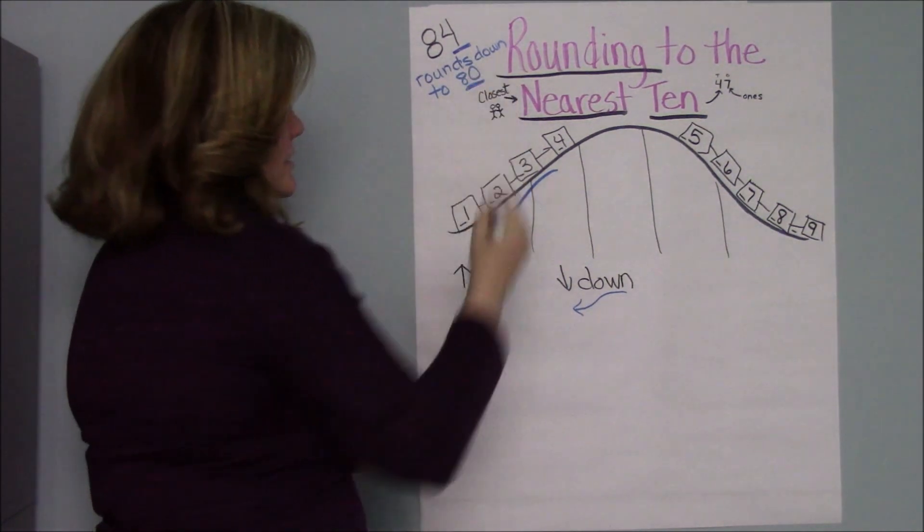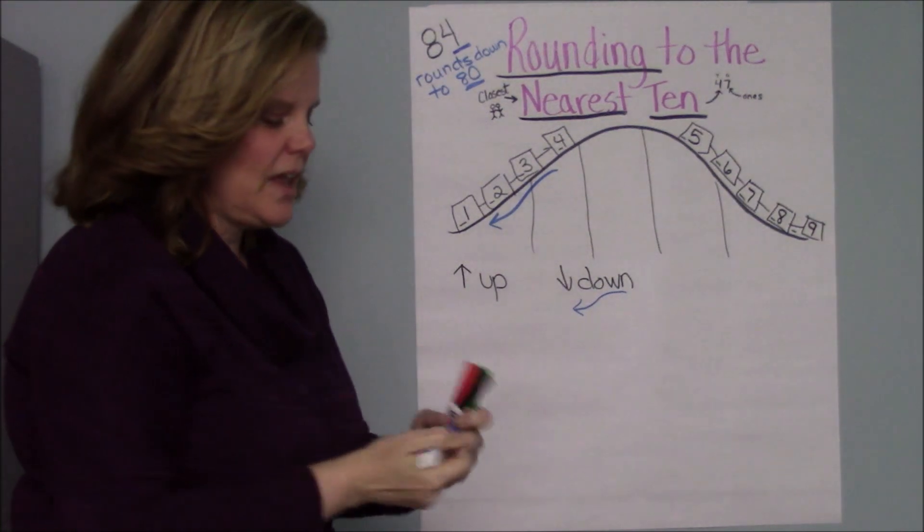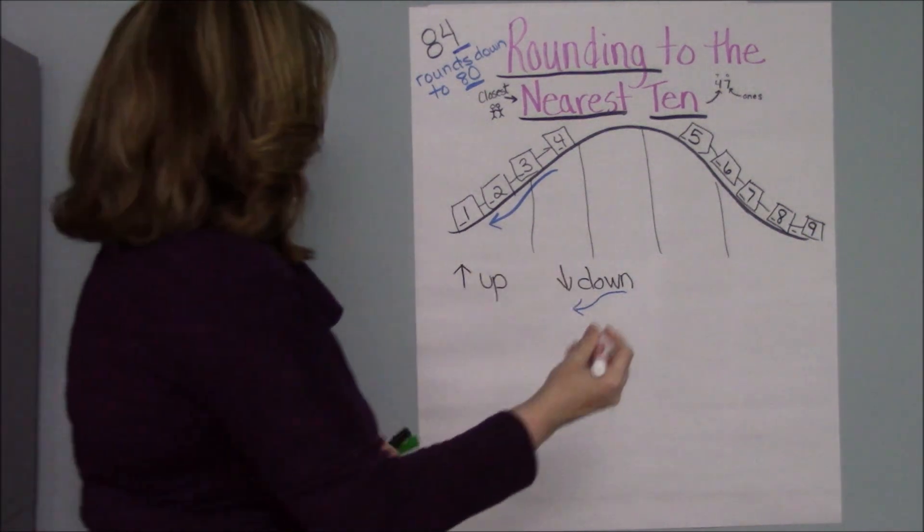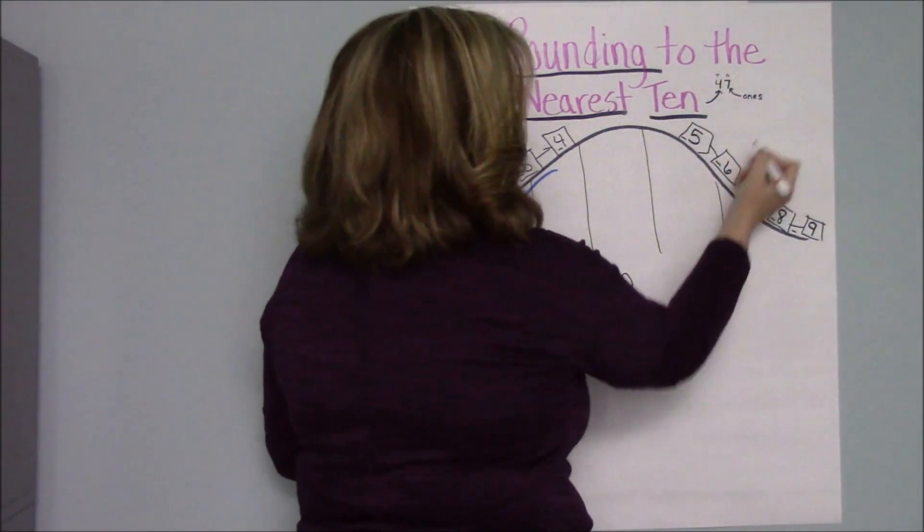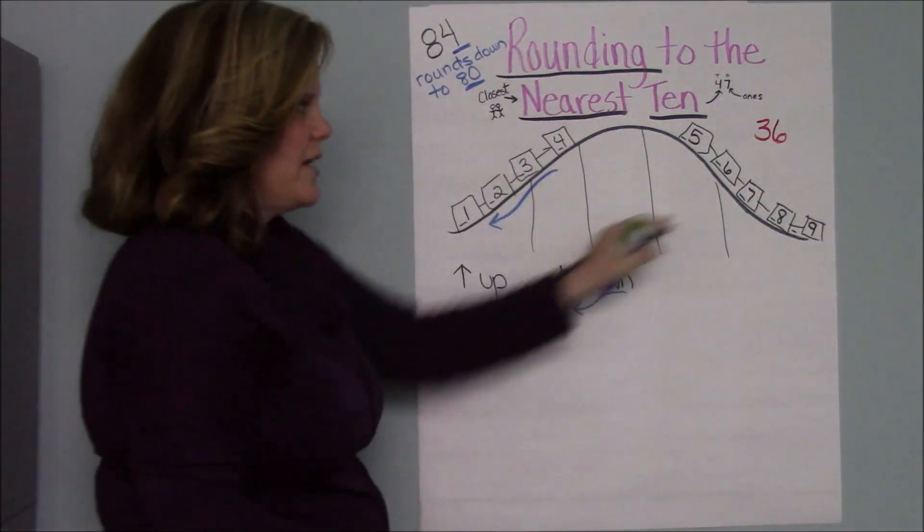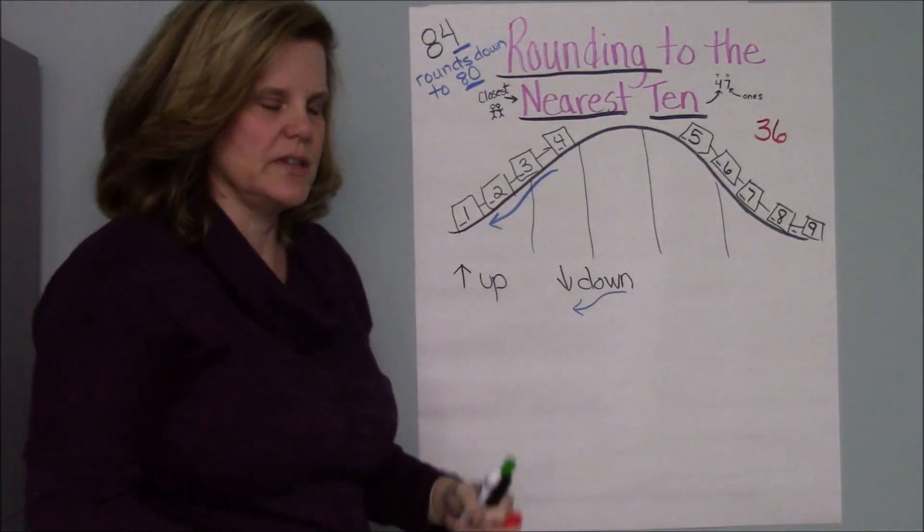80 is your nearest ten. If we pick an example where your number is, let's say, we'll put one over here, 36. Round 36 to the nearest ten.